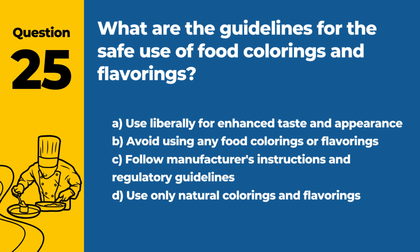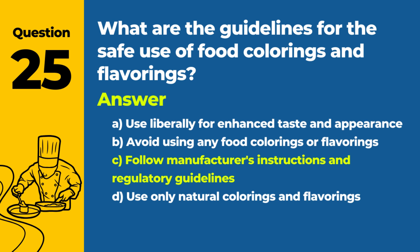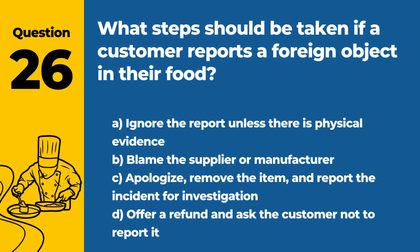Question 25: What are the guidelines for the safe use of food colorings and flavorings? a. Use liberally for enhanced taste and appearance. b. Avoid using any food colorings or flavorings. c. Follow manufacturer's instructions and regulatory guidelines. d. Use only natural colorings and flavorings. Answer: c. The safe use of food colorings and flavorings involves adhering to the manufacturer's instructions and regulatory guidelines to ensure consumer safety.